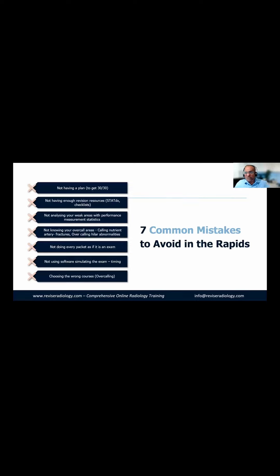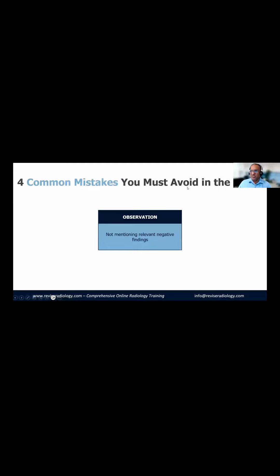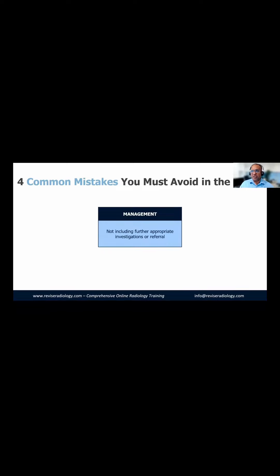Now moving into the long cases — my top quote here is: a bad system will beat a good person every time. The most common mistakes in the longs are not mentioning the relevant negative findings, not listing differentials in order of likelihood, not limiting differentials to around two or three, and not including further appropriate investigations. Let's look at some long cases on the website.